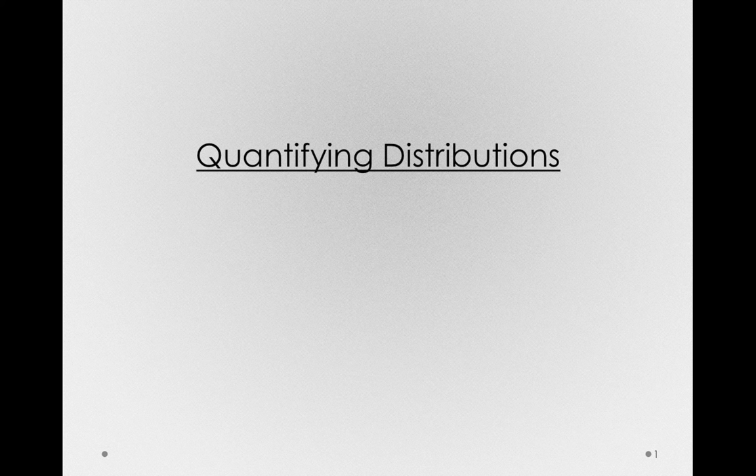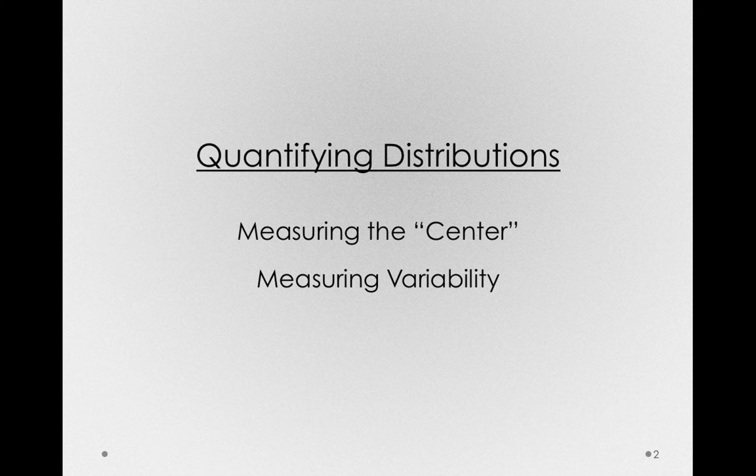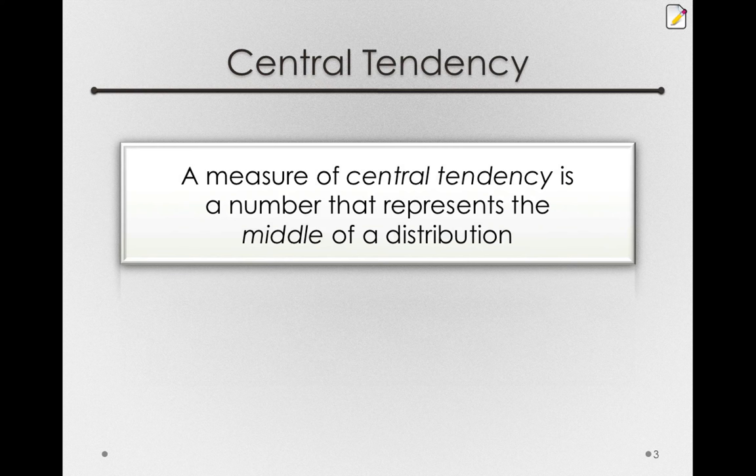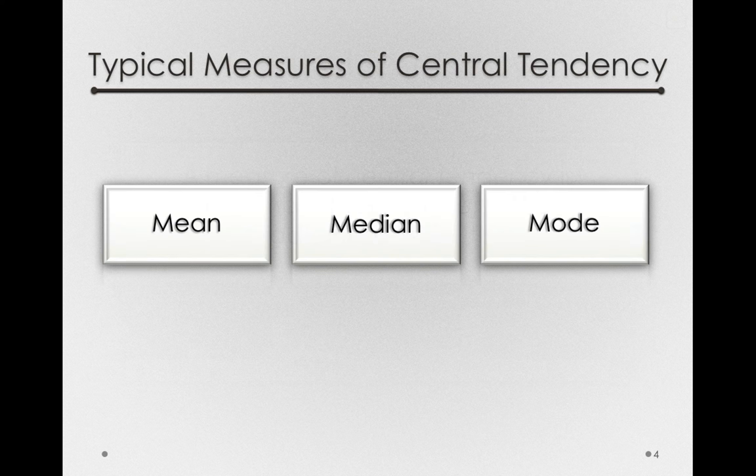We now turn to our first quantifications of distributions, measuring the center and measuring variability. Starting with center, a measure of central tendency is simply a number that represents the middle of a distribution. And we're all familiar with several different measures of central tendency: means, medians, and modes, all of which we saw in the distribution platform in JMP.